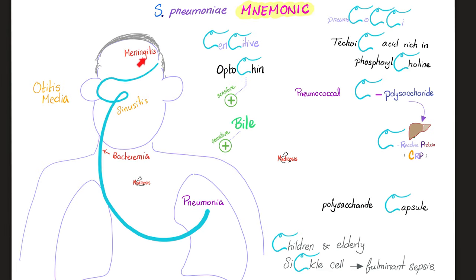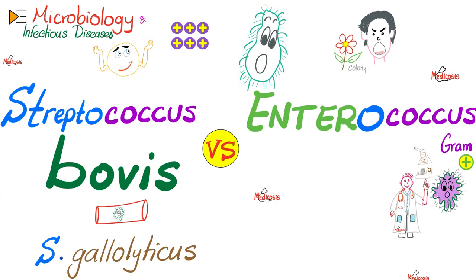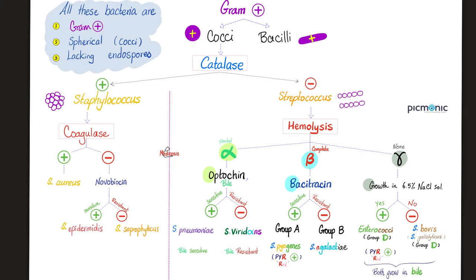Here is a cool mnemonic for Streptococcus pneumoniae — everything here is C. By the way, you know the C-reactive protein? Why do we call it C-reactive protein? Because of the C polysaccharide of pneumococcus. Coming up next: Streptococcus bovis and Enterococcus. Both can grow in bile, but only Enterococcus can grow in salt.